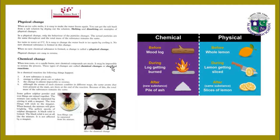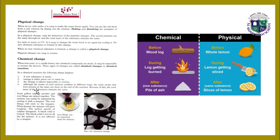What is chemical change? When iron rusts or a candle burns, new chemical compounds are made. It may be impossible to reverse the process. These types of changes are called chemical changes or chemical reactions. In a chemical reaction: a new substance is made, energy is either given out or taken in, and the change is almost impossible to reverse. Although the atoms of each element combine in different ways, the same atoms present at the start are there at the end.